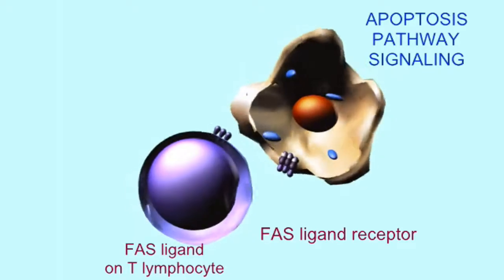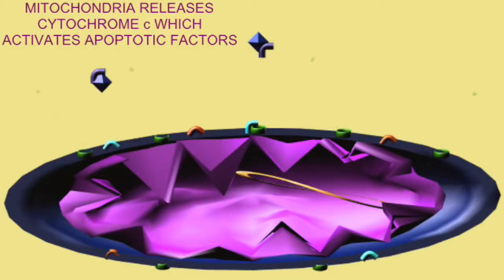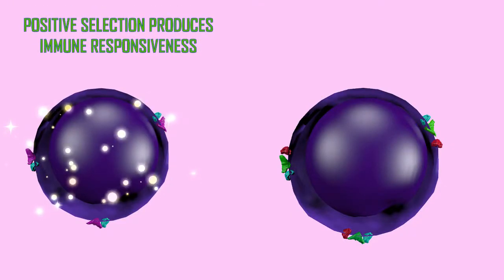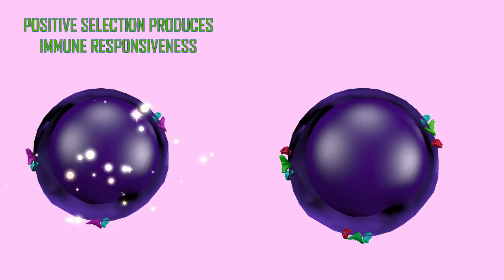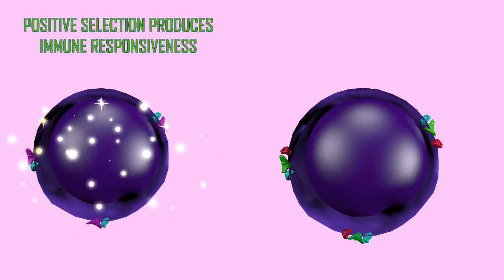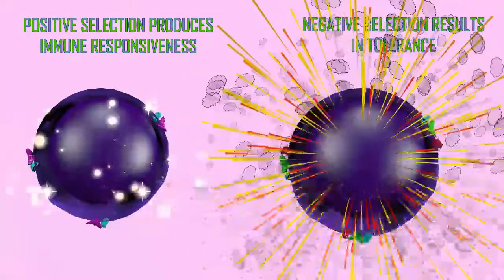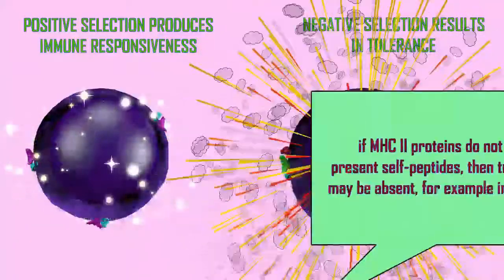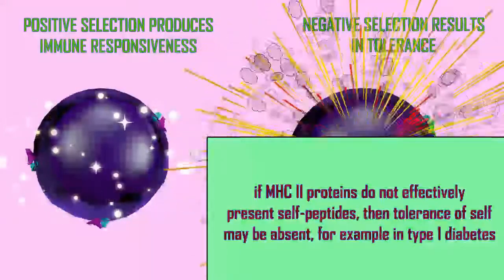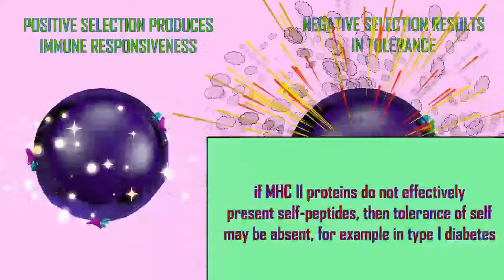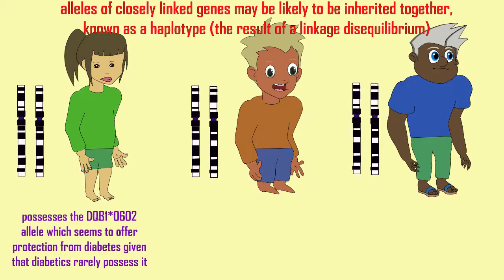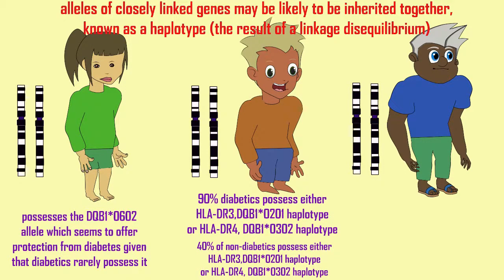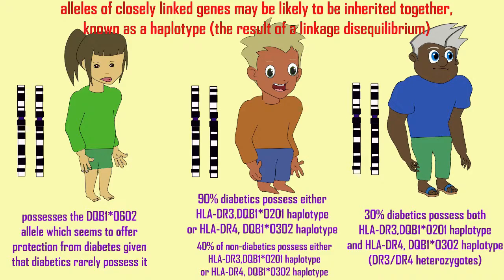This results in tolerance. If this does not work effectively, then this could cause an autoimmune disease later in life. For example, if the MHC proteins, which should be training the T lymphocytes to recognize self, do not do so effectively — perhaps because they do not bind self-peptides effectively — then the T lymphocytes in the thymus might never learn to recognize self. This is the reason that certain alleles of MHC2 complex proteins predispose one to type 1 diabetes.